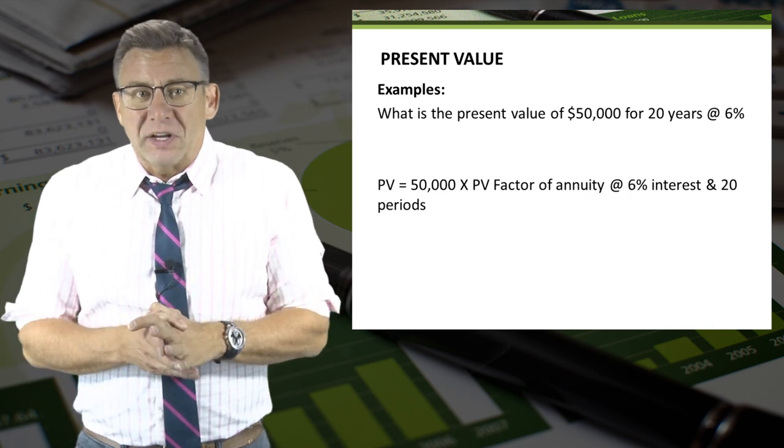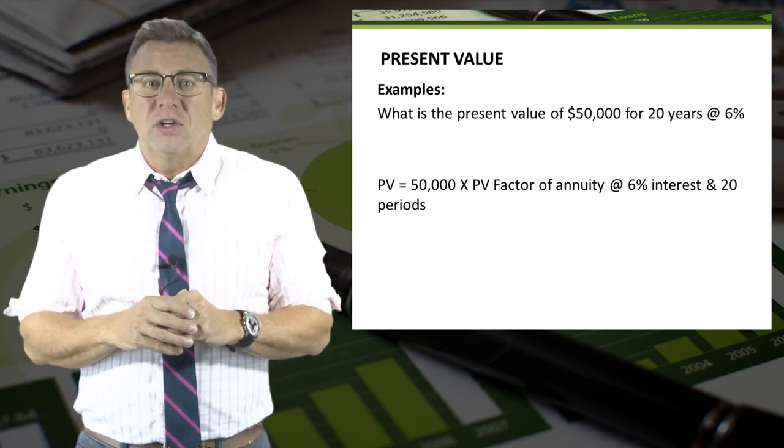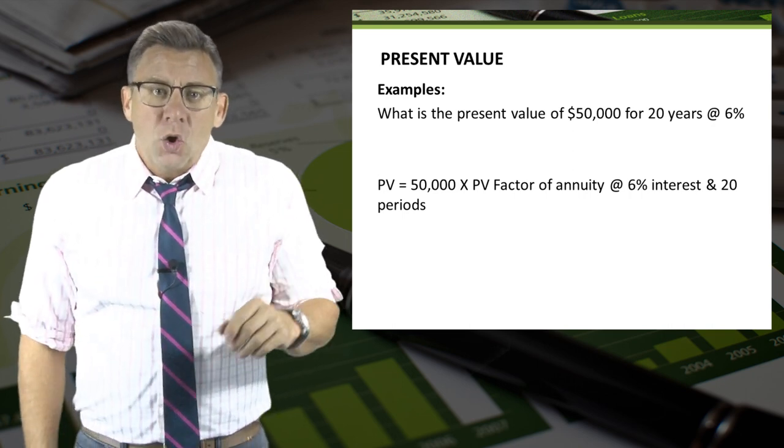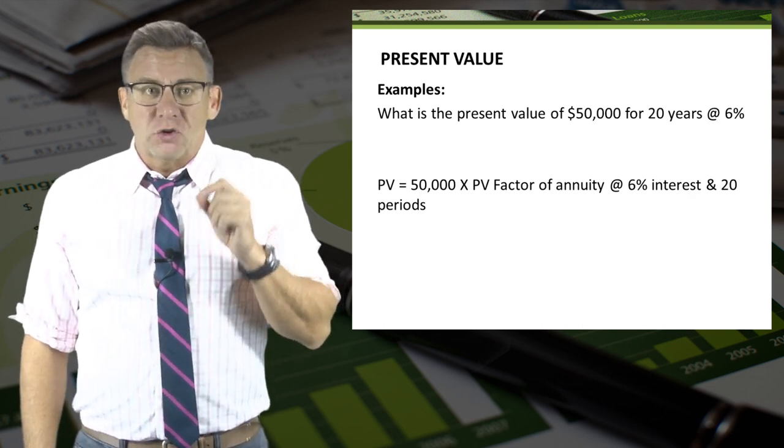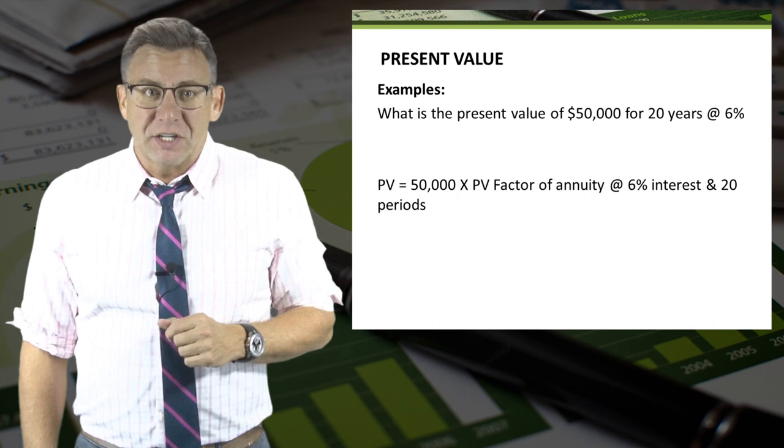Let's do one more example with the table only. This time we'll use the annuity table. What is the present value of $50,000 for 20 years at 6% interest?